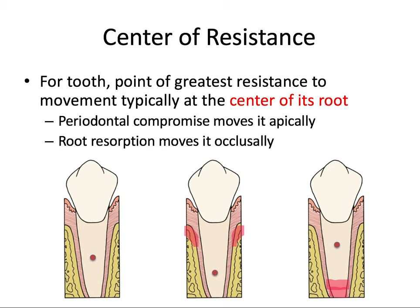For a tooth, it's a little bit different because the tooth isn't floating in space or laying flat on a table — it's tethered to bone and soft tissue at its root. The center of resistance for a healthy tooth is generally about halfway between the alveolar crest and the root apex, around the center of the root. The center of resistance tends to be located more apically for a periodontally compromised tooth with bone loss at the alveolar crest, and more occlusally when apical root resorption has occurred. In all three cases, the center of resistance is at the center of the portion of root bound to bone.